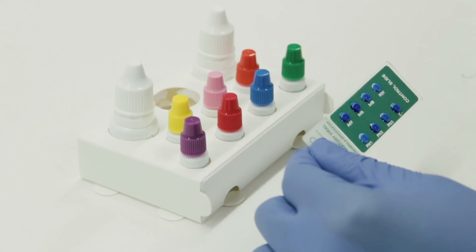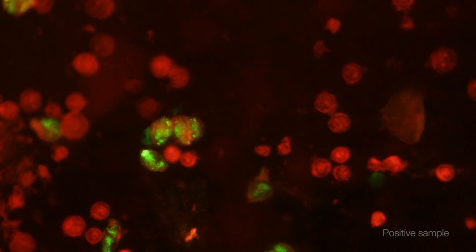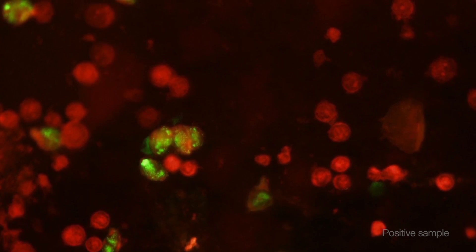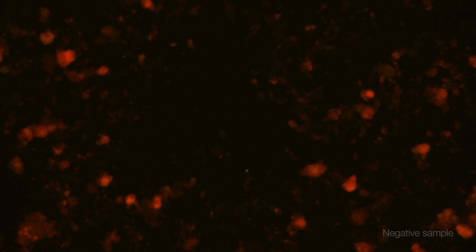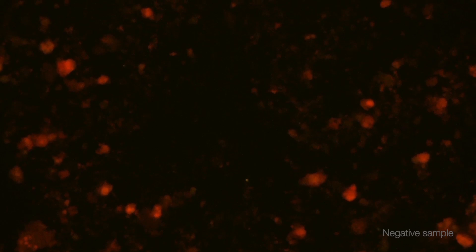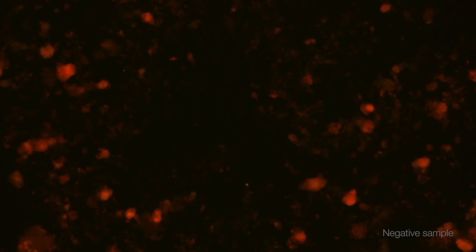A positive sample is one in which two or more intact cells display a characteristic apple green fluorescence pattern. A negative sample is one in which an appropriate number of intact cells all display minimum fluorescence or absence of fluorescence.